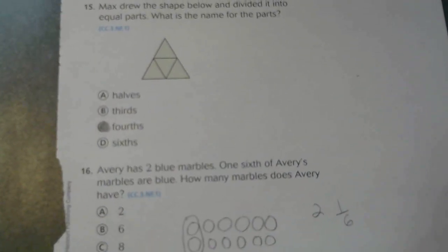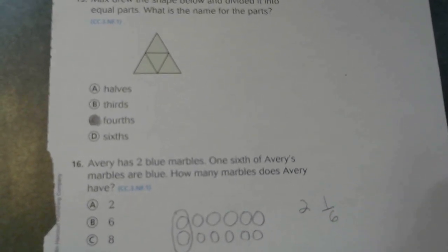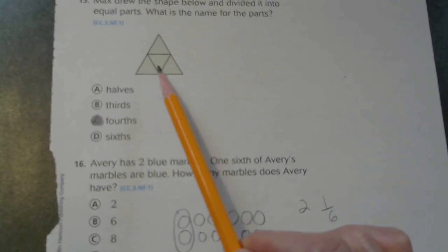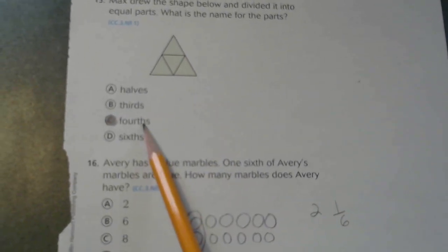Then it says, Max drew the shape below and divided it into equal parts. What is the name for the parts? One, two, three, four. So he broke it up into fourths.